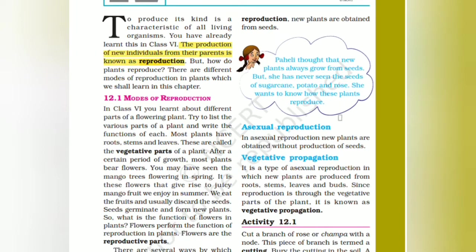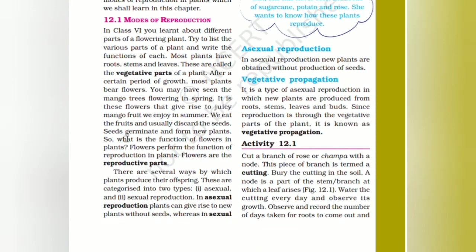We will list the various parts of the plant and write the functions of each. Most plants have roots, stems and leaves. They are called the vegetative parts of the plant. After a certain period of growth, most plants bear flowers.